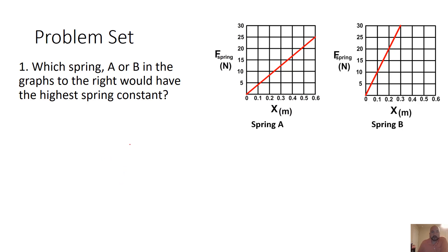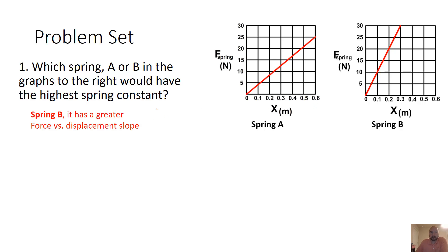There's a problem set included in today's activities. When doing the problem set, make sure you're doing the work yourself and then checking — don't just take the answers. Looking at the graph, which spring, A or B, has the higher spring constant? You're looking at the slope: the higher the slope, the higher the spring constant. Spring B has the greater spring constant because it shows greater force versus displacement.